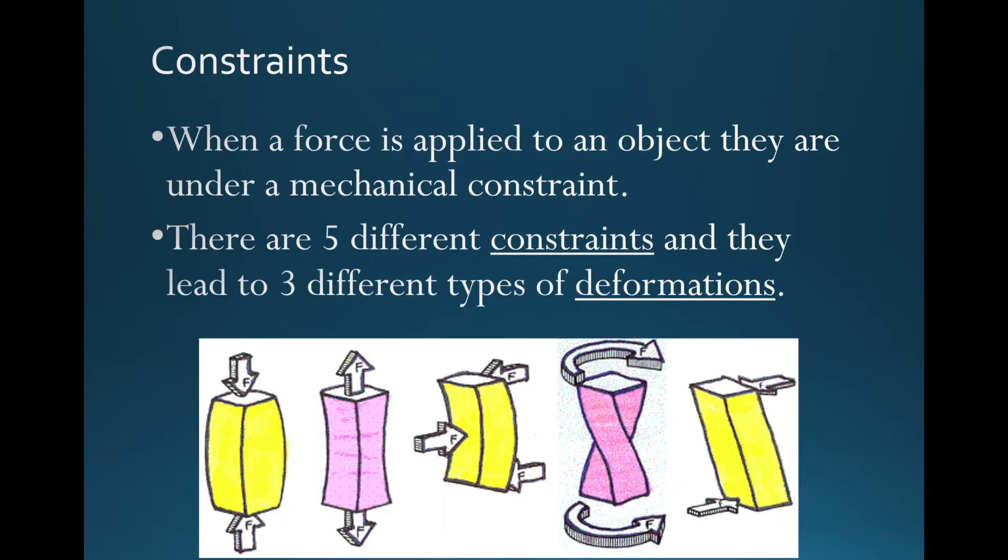In the last lesson we talked about properties of materials. Now we're going to talk about what happens when we apply a force to an object. When we apply a force to an object, those objects are under a mechanical constraint. There are five mechanical constraints we will look at, and those constraints lead to three different outcomes, which we call deformations.